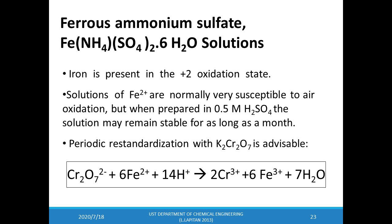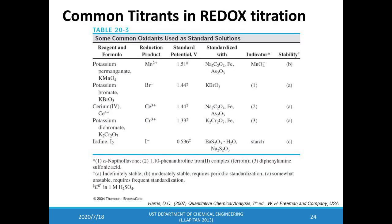In redox titration, the titrant's concentration must remain stable during the analysis. Because a titrant in a reduced state is susceptible to air oxidation, most redox titrations are carried out using oxidizing agents as titrants. There are several common oxidizing titrants, and their use gives special names to the methods: permanganometry uses potassium permanganate, cerimetry employs cerium-4 salts, dichrometry uses potassium dichromate, iodimetry uses iodine, and bromometry uses bromine as a titrant.